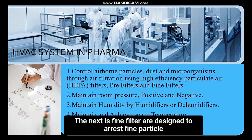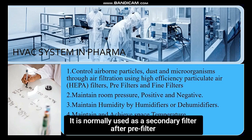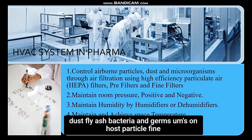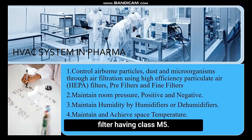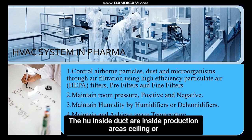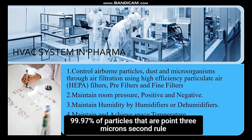Fine filters are designed to arrest fine particles up to 1 to 10 microns. They are normally used as a secondary filter after the pre-filter to have a prolonged service life, targeting pollen, spores, cement dust, fly ash, bacteria and germs on host particles. Fine filters have class M5. After fine filters, we use HEPA filters, which can be used inside the AHU, inside ducts, or inside production areas — ceiling or walls. HEPA filters are designed to arrest very fine particles: 99.97% of particles that are 0.3 microns.